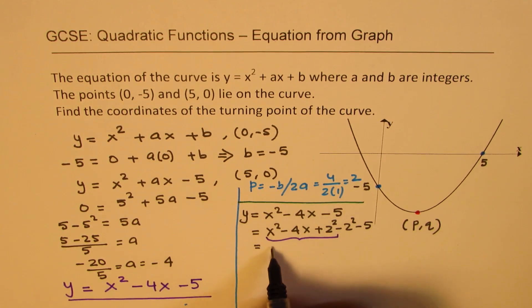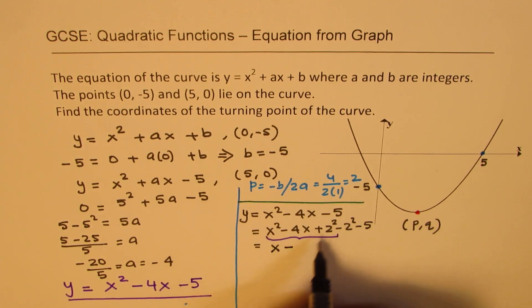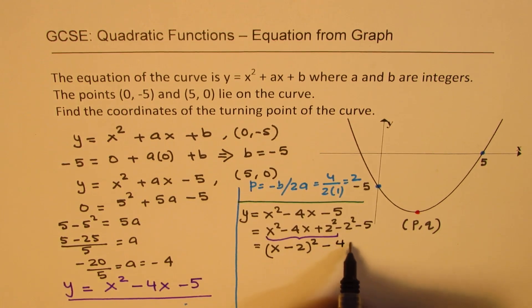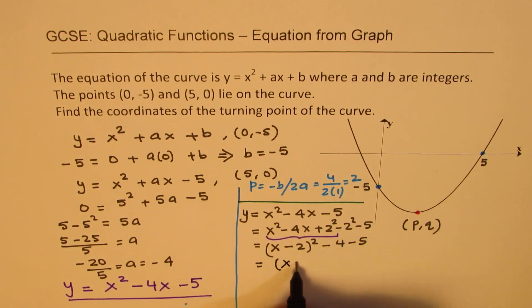We could write this as (x - 2) whole squared, and minus 2 squared is -4, and that is -5. So what we get here is (x - 2) squared minus 9.